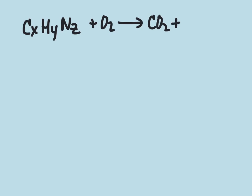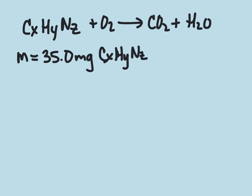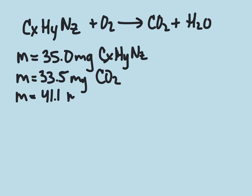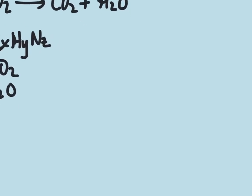produces carbon dioxide and water. And in the volume of, if we have the combustion of 35.0 mg of this compound, CXHYNZ, we get 33.5 mg of CO2 and 41.1 mg of H2O.